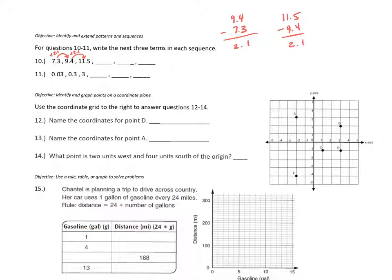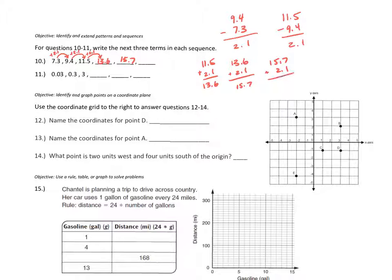To find the next terms, I keep adding 2.1: 11.5 plus 2.1 is 13.6, and 13.6 plus 2.1 is 15.7. You can also spot a pattern in the digits — the ones place increases by 2 and the tenths place increases by 1 each time, which makes sense because we're adding 2 wholes and 1 tenth each step.